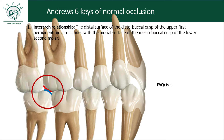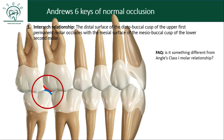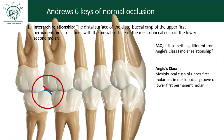You must be thinking — is this something different from Engel's classification? Because Engel always talks about the mesobuccal cusp, whereas Andrews has talked about the distobuccal cusp. According to Edward Engel, in a Class I molar relationship, the mesobuccal cusp of the upper first permanent molar lies in the buccal groove of the lower first permanent molar. Both Andrews' molar relationship and Engel's Class I molar relationship are the same — they indicate the same inter-arch relationship, but the referencing cusp is different. Both have taken the first permanent molar as the reference tooth.